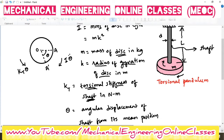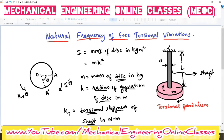If we look at the diagram of the disk from the top — this is the top view of the disk — initially point A was here, but because of the rotation of the disk, A has moved to A dash. So at any instant the angle between OA dash and OA will be theta, given in radians.